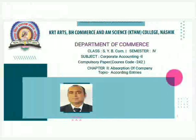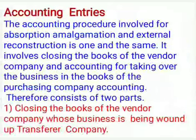In the previous lecture, we have learned how to calculate Purchase Consideration (PC). We also learned four different methods of making PC. The PC needs to be calculated while solving the problem. Next topic: Accounting Entries. The accounting procedure involved for absorption, amalgamation, and external reconstruction is one and the same. It involves closing the books of the vendor company and accounting for taking over the business in the books of the purchasing company.